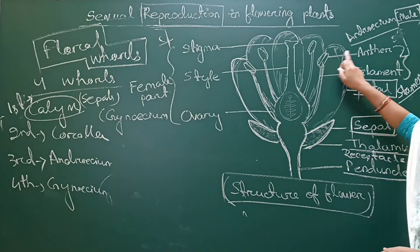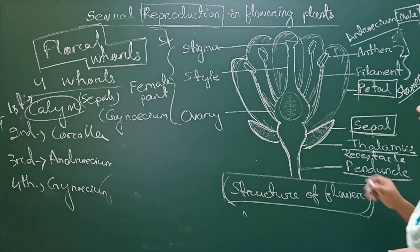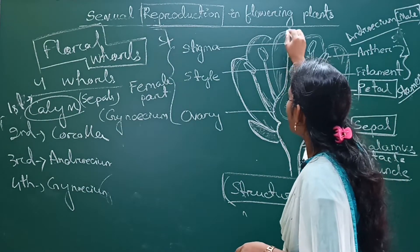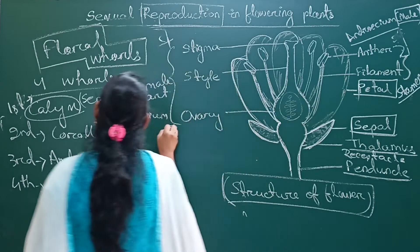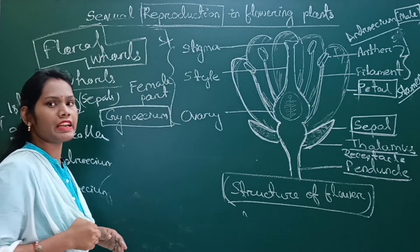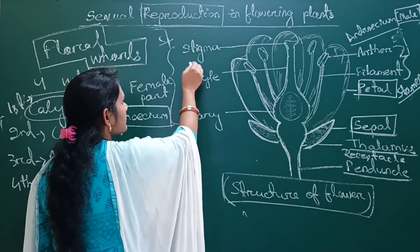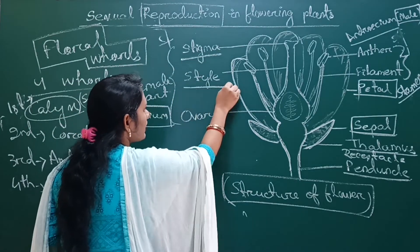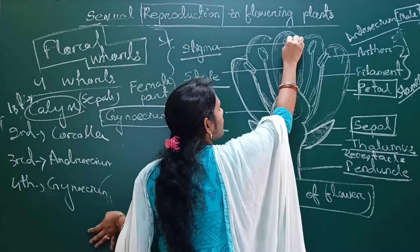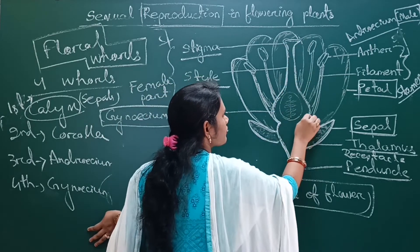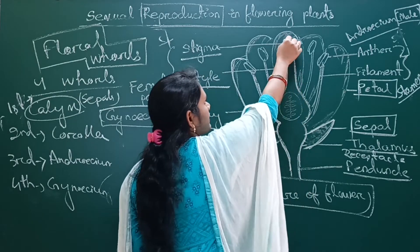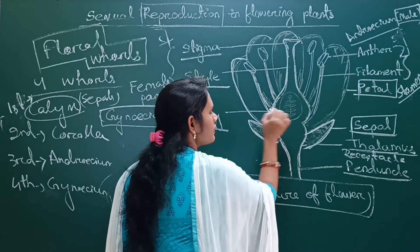Each stamen consists of anther and filament. The fourth whorl is the gynoecium, which is the female part of the flower. It consists of stigma, style, and ovary.